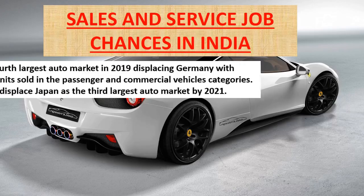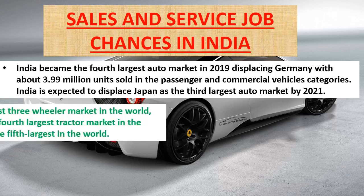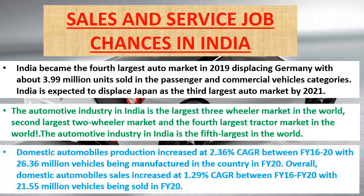In the sales and service sector, India became the fourth largest auto market in 2019, displacing Germany, with about 3.99 million units sold in passenger and commercial vehicle categories. India is expected to displace Japan as the third largest automobile market in 2021. The automotive industry in India is the largest three-wheeler market in the world, the second largest two-wheeler market, and the fourth largest tractor market in the world. Domestic automobile production increased at a 2.3% CAGR between financial years 2016–2020, with 26.36 million vehicles manufactured in financial year 2020.